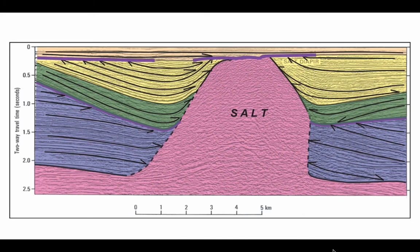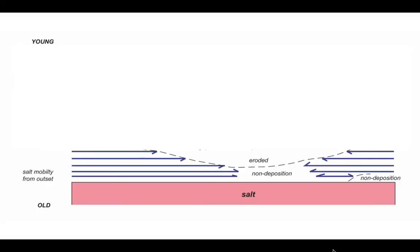Looking at this image again, we're going to start with the purple then and show its various lap relationships down onto the salt and against the salt, and upwards terminating against the erosional unconformity. So it plots like this: non-deposition where the purple units lap against the salt bodies, and erosion represented by the erosional unconformity.